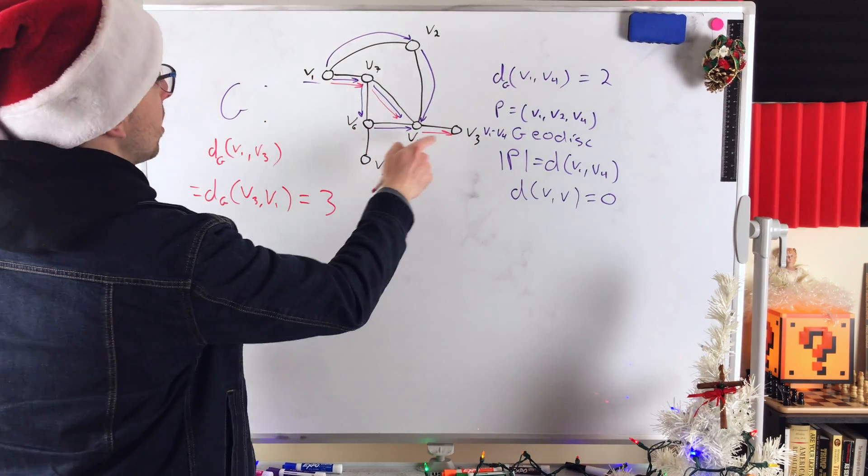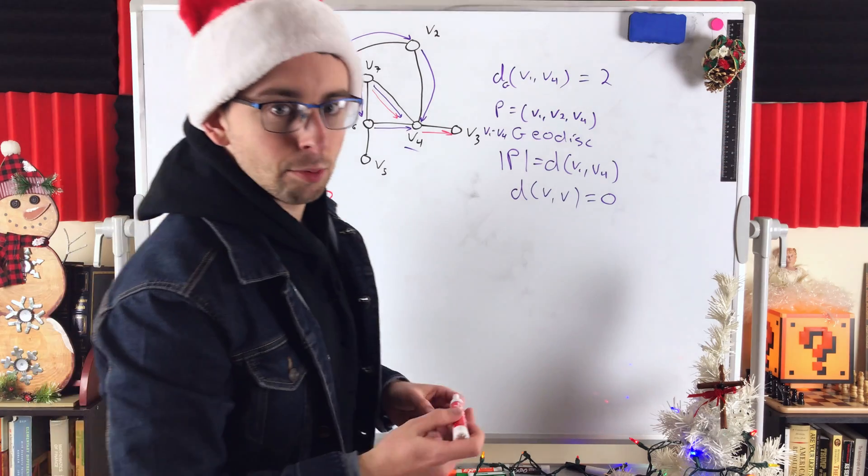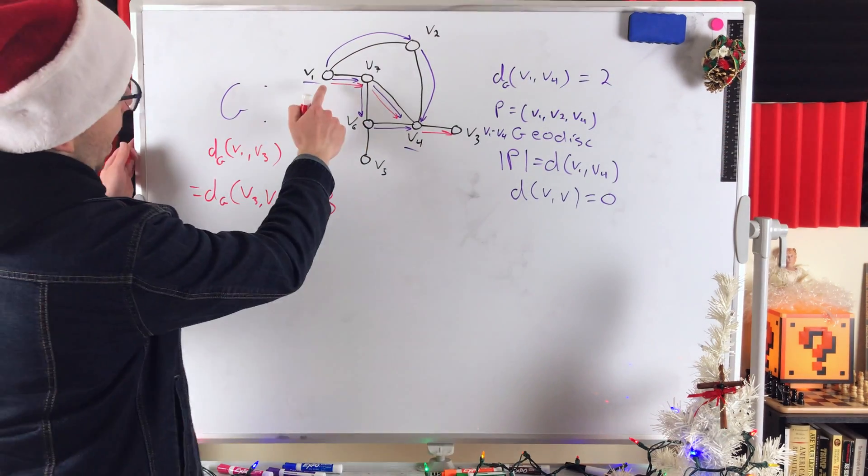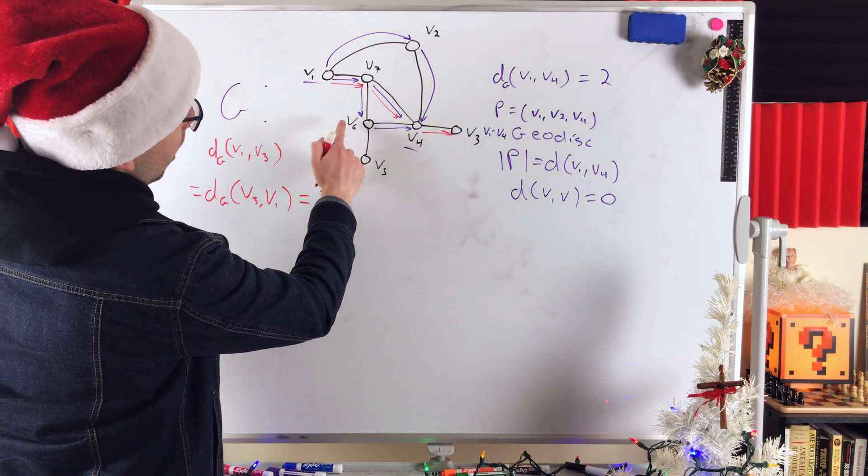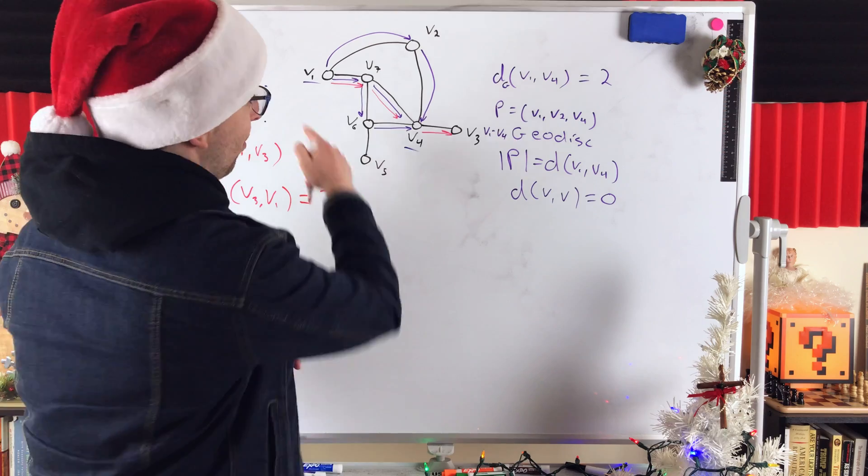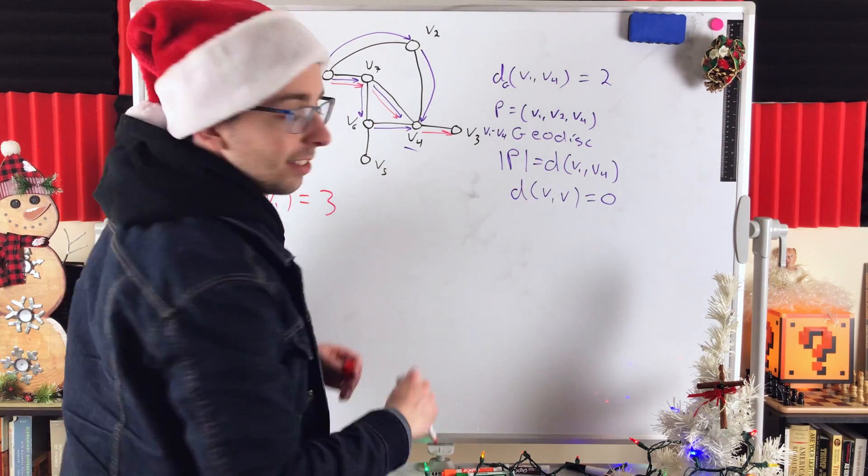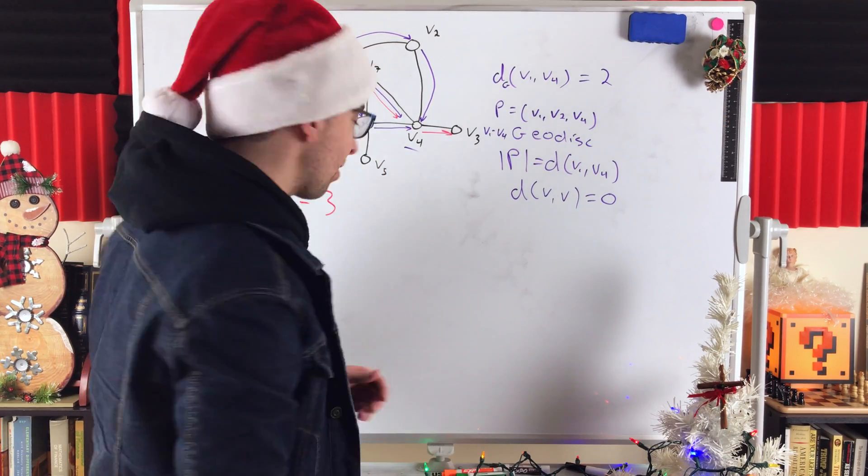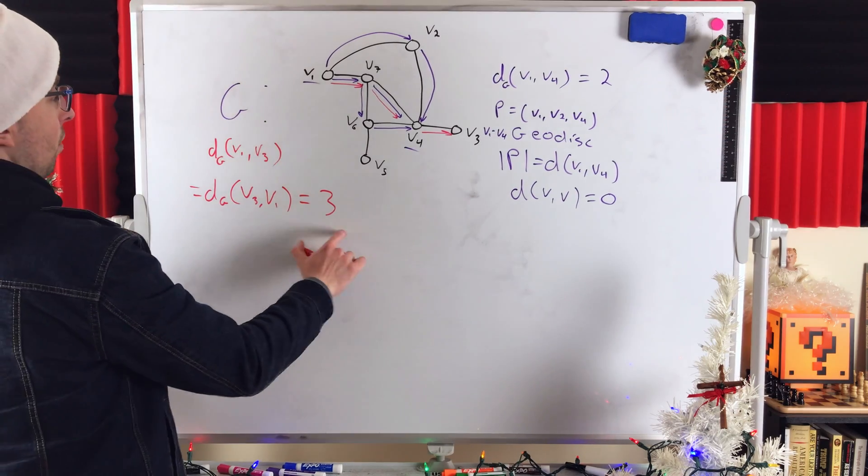There's no way to get from V1 to V3 in less than three edges. So, this path from V1 to V7, to V4, to V3, is a V1, V3 geodesic. It is a shortest path connecting the vertices, so its length is the distance between those vertices.